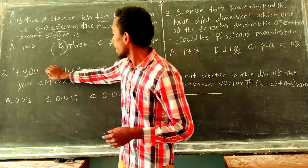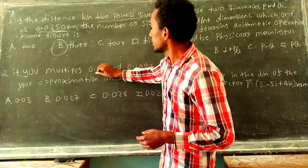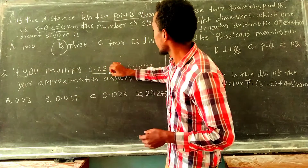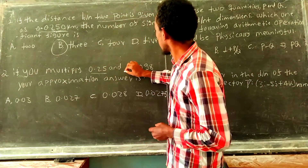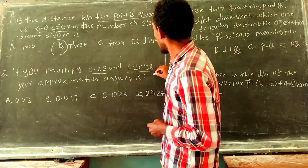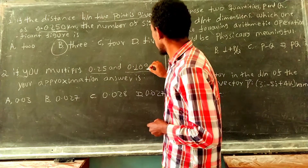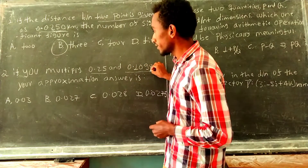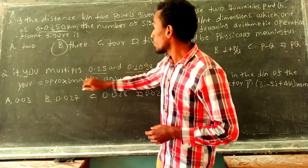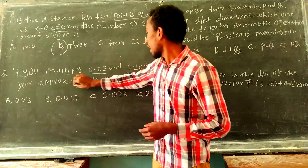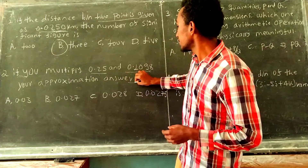If you multiply 0.25 and 0.1098, your approximation — the answer is?